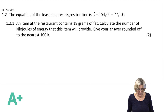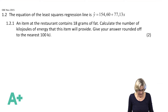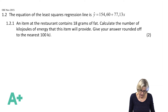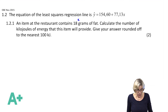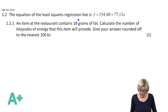The equation of the least squares regression line is ŷ = 154.60 + 77.13x. An item at the restaurant contains 18 grams of fat, and the grams of fat is your x. Calculate the number of kilojoules of energy that this item will provide.